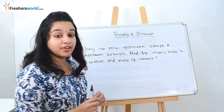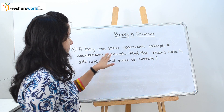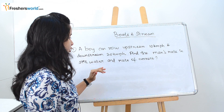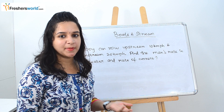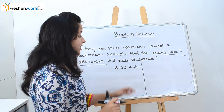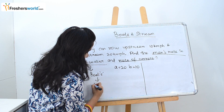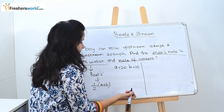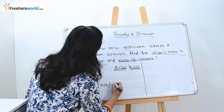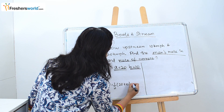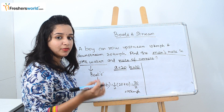Let's get started with some questions. The first question: a boy can row upstream at 10 kilometers per hour and downstream at 20 kilometers per hour. Find the man's rate in still water and rate of current. Man's rate in still water is the boat speed, which is half of (A plus B). Downstream speed is 20 km/h and upstream speed is 10 km/h. So half of (20 plus 10) equals half of 30, which is 15 kilometers per hour.